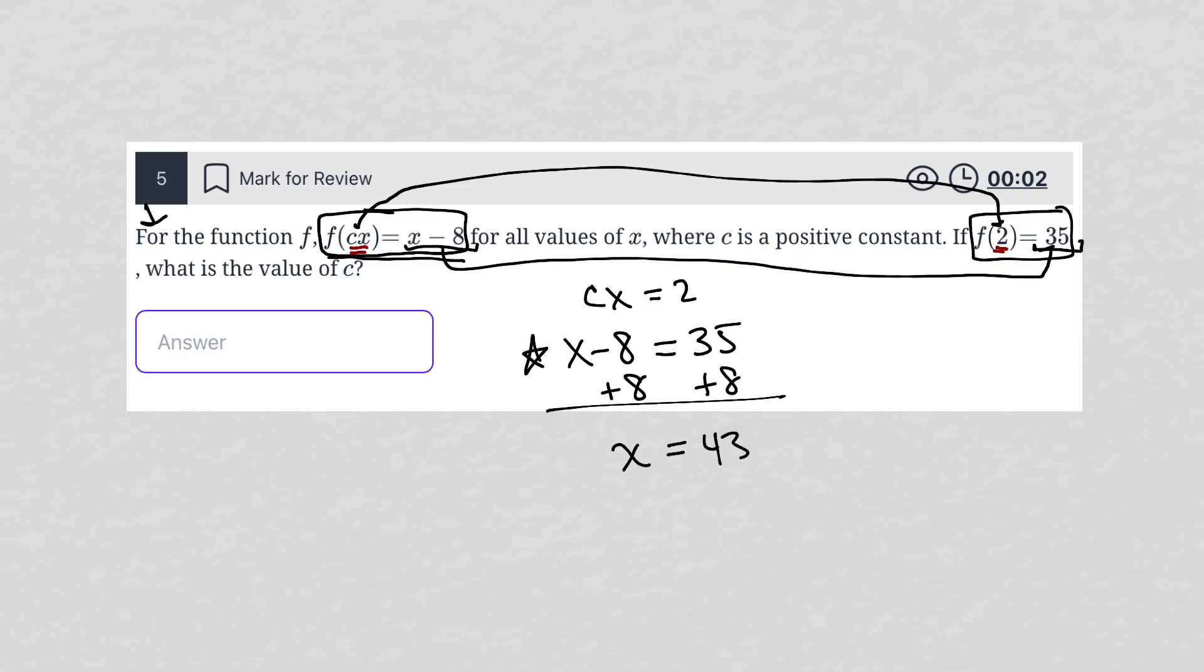So when x is 43, we know that x minus 8 equals 35 is true. When x is 43, that means cx equals 2 would become c times 43 equals 2. The question asks for the value of c, so all we have to do now is solve for c. We solve for c by dividing both sides by 43, and we find that c is equal to 2 over 43.